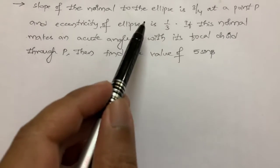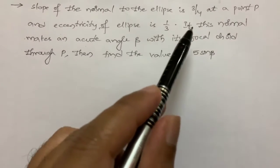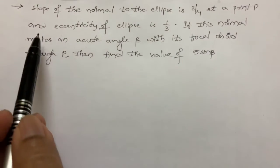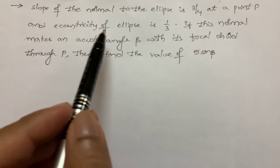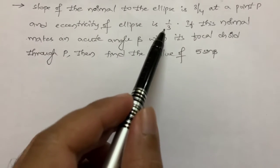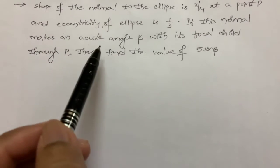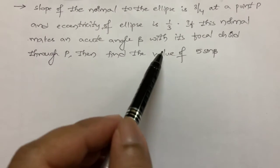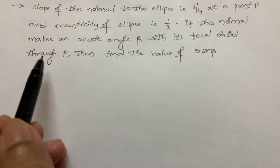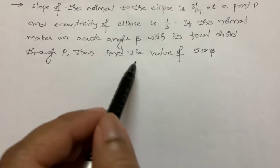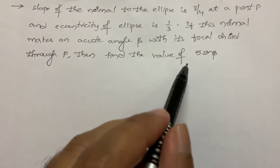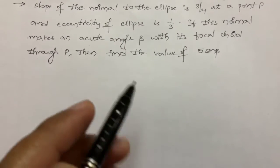The slope of the normal to an ellipse is 3/4 at a point P, and the eccentricity of the ellipse is 1/3. If this normal makes an equal angle with its focal chord through P, then find the value of 5·sin β.